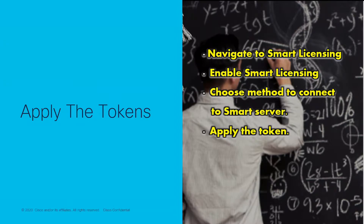If you want to configure Expressway with a smart license, you need to navigate to the smart licensing page, enable smart licensing, choose a method to connect to the smart server, and apply the token.